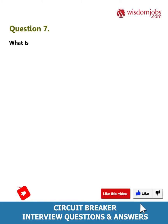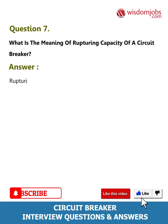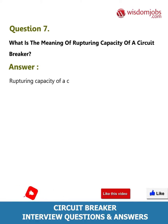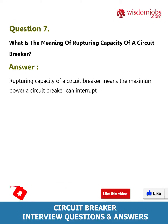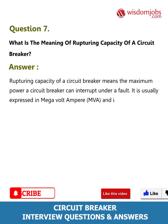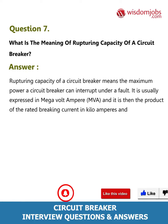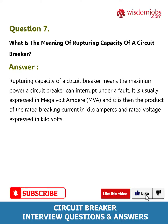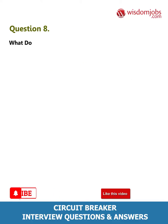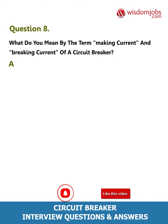Question 7: What is the meaning of rupturing capacity of a circuit breaker? Answer: The rupturing capacity means the maximum power a circuit breaker can interrupt under a fault. It is usually expressed in megavolt amperes (MVA) and is the product of the rated breaking current in kiloamperes and rated voltage in kilovolts. Question 8: What do you mean by the making current and breaking current of a circuit breaker?